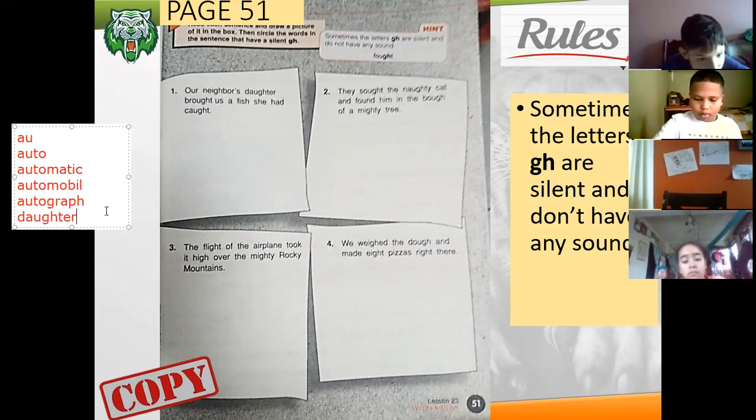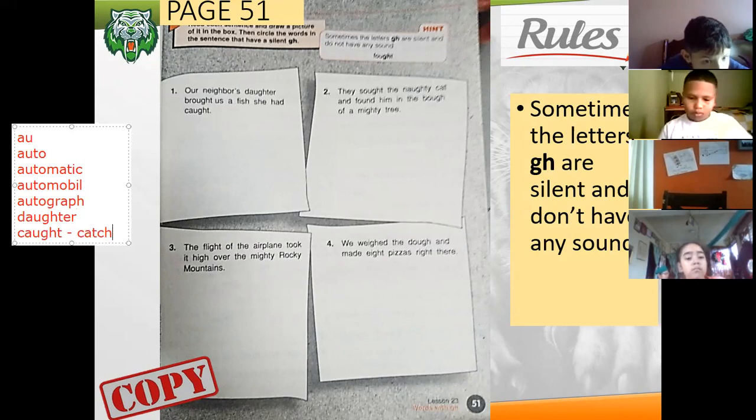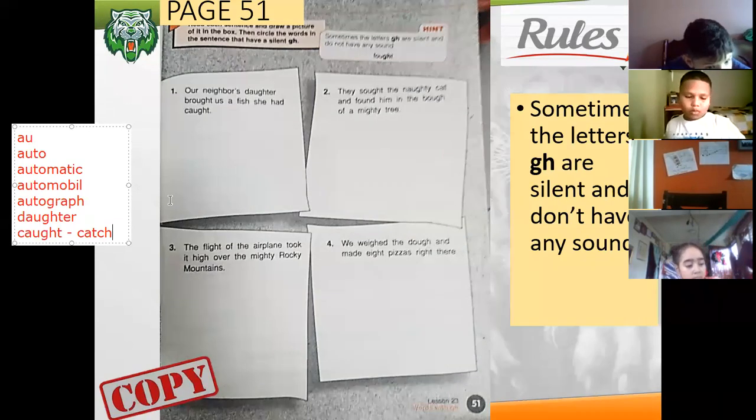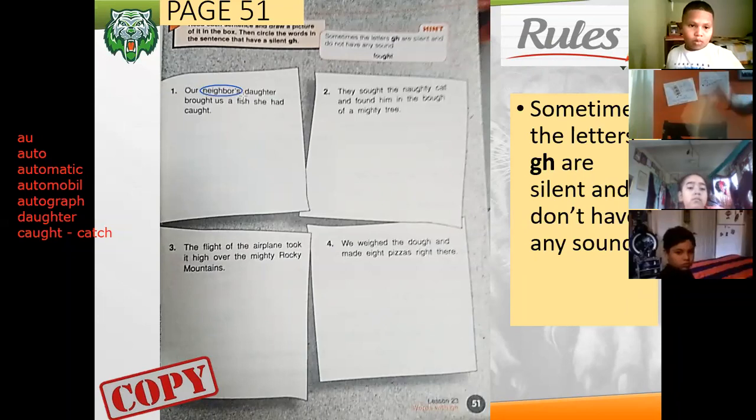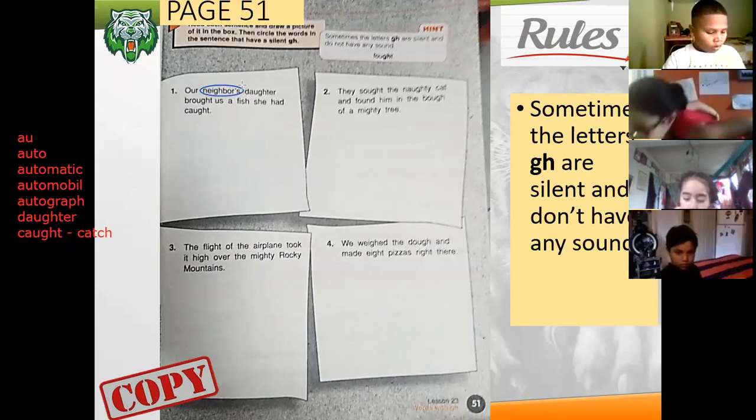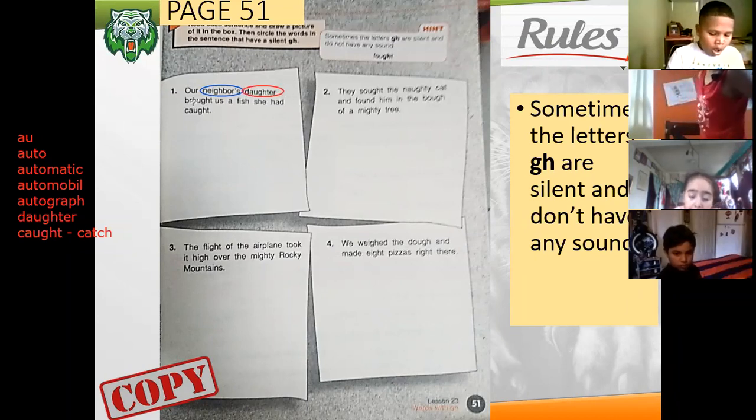Automobile, okay, auto like autograph. So, this one is our neighbor's daughter. The daughter brought us a fish she had caught. Caught is the past tense of catch. Catches in the present, caught is in the past. So the words we have to circle: neighbors, daughter, brought, and caught.